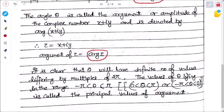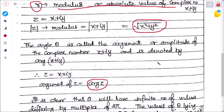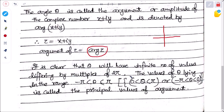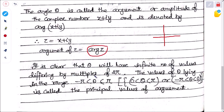It is clear that θ has infinitely many values differing by multiples of 2π, since we can rotate around multiple times. The values of θ lying in the range (−π, π] are called the principal value of the argument.